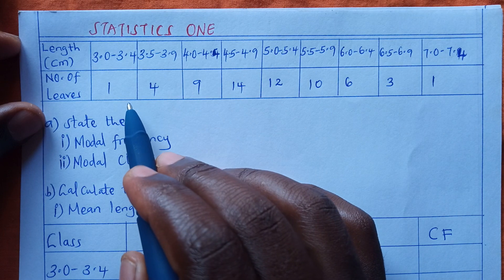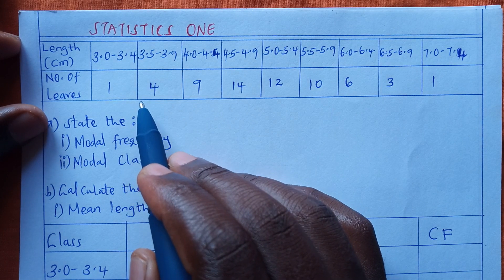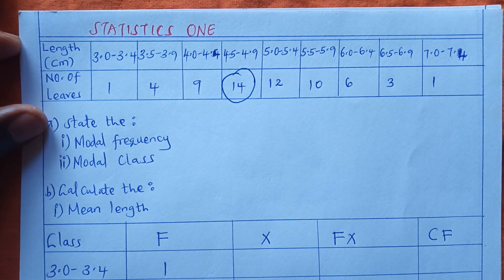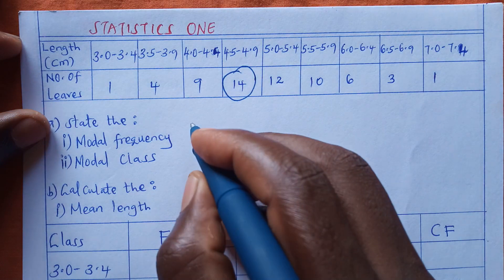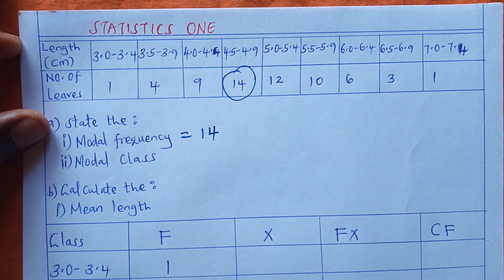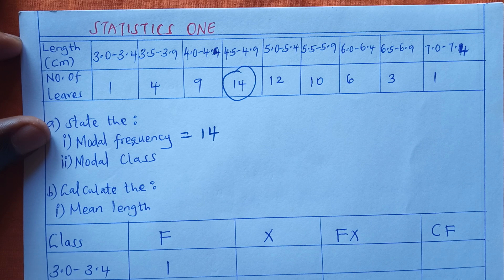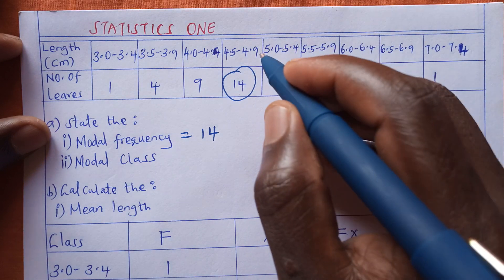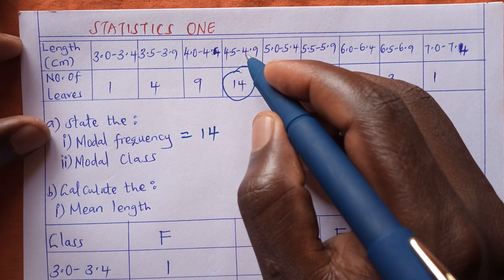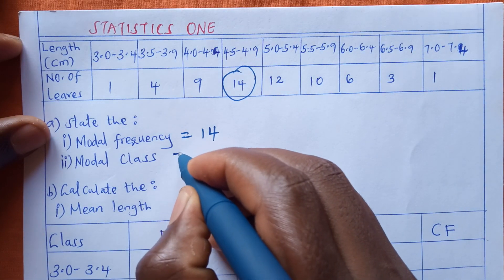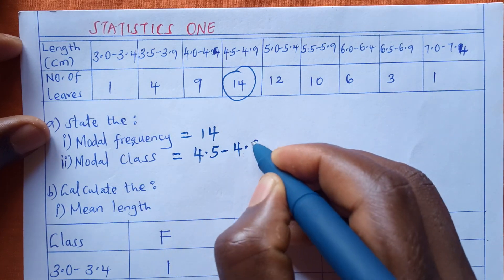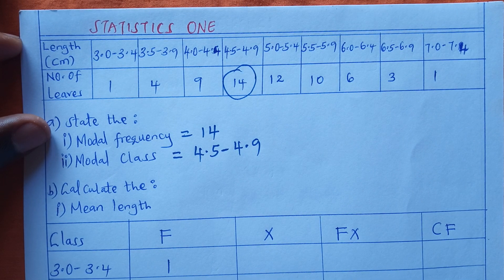If you check very well, you discover that the highest frequency we have is 14. So 14 is going to be our modal frequency. The modal class is the class with the highest frequency, and that class is in fact 4.5 all the way to 4.9. So our modal class is 4.5 to 4.9.